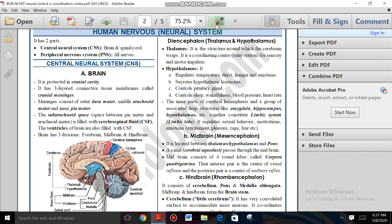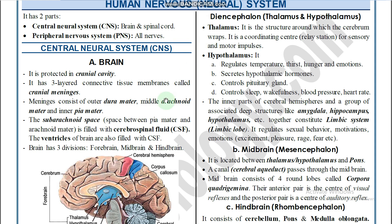Good morning students. Today we are going to discuss the remaining portion of the human nervous system. The human nervous system is majorly divided into two components: CNS and PNS — central nervous system and peripheral nervous system. The central nervous system consists of the brain and spinal cord, while the peripheral nervous system includes all cranial nerves and spinal nerves.